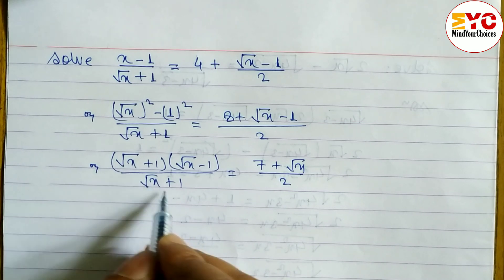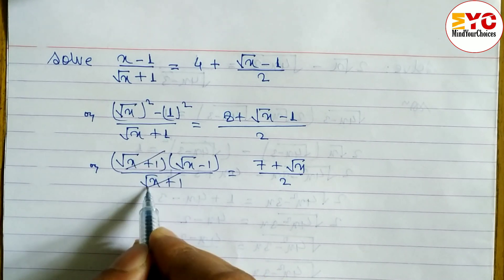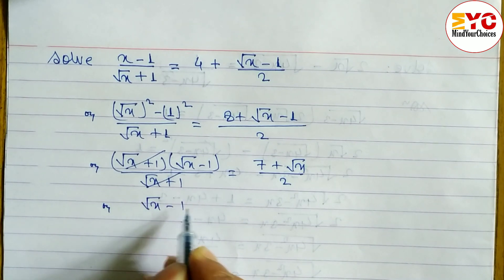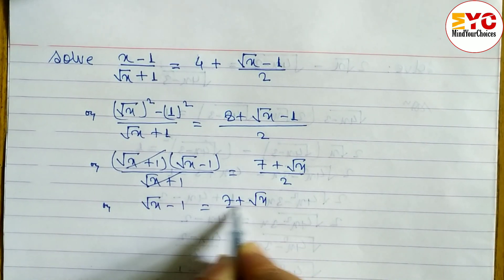Here we have the same term (√x + 1) in numerator and denominator, so we can cancel them. What remains is √x - 1 = (7 + √x)/2.